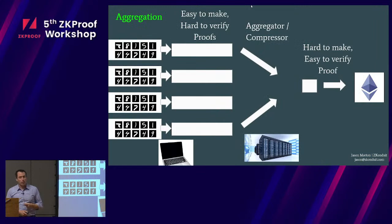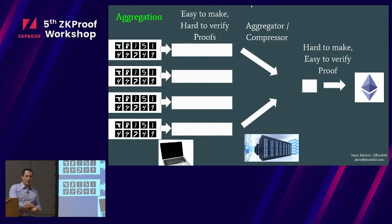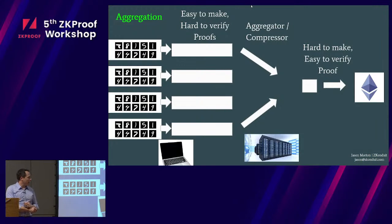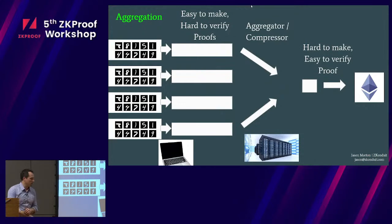Aggregation looks something like this: you have a proof that's easy to make but hard to verify. It gets verified and compressed on a big server into something that's hard to make but easy to verify — you might require a terabyte RAM machine for that stage, where the first stage hopefully runs on a mobile phone. Then finally you have something small enough to check on-chain.